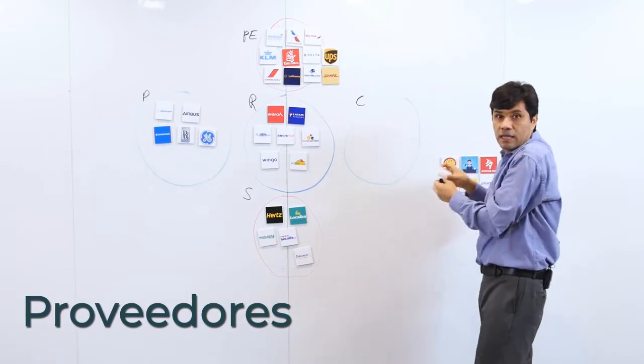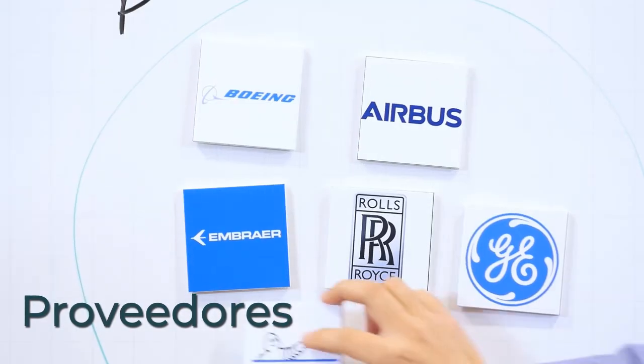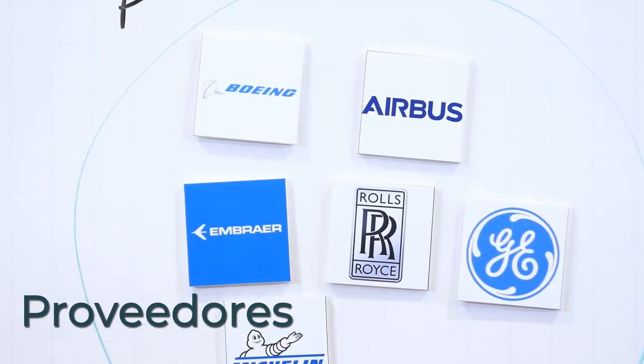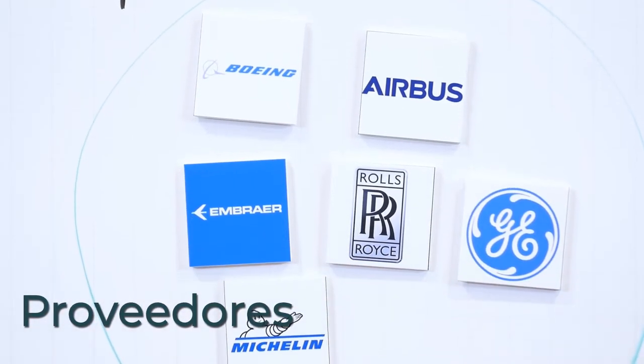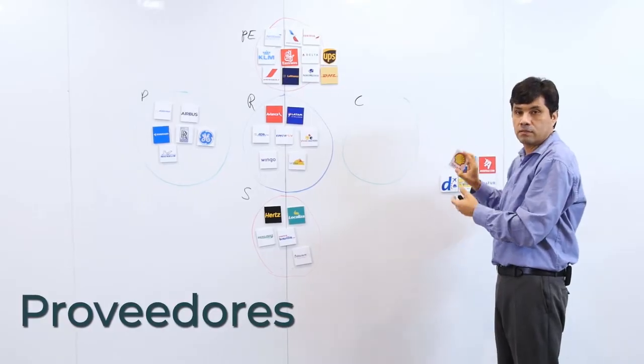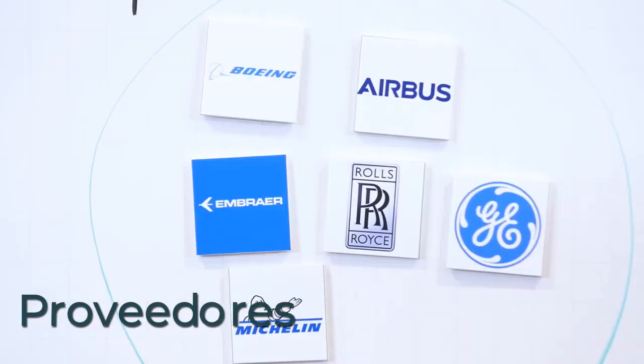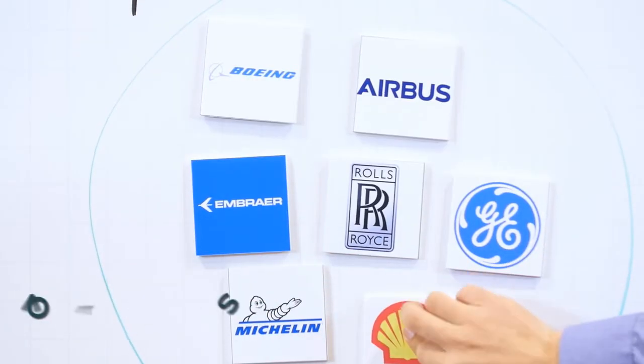También están los proveedores de llantas, siendo Michelin un ejemplo. Y los proveedores de combustibles; en este caso ponemos el ejemplo de Shell, aunque obviamente hay muchos más.